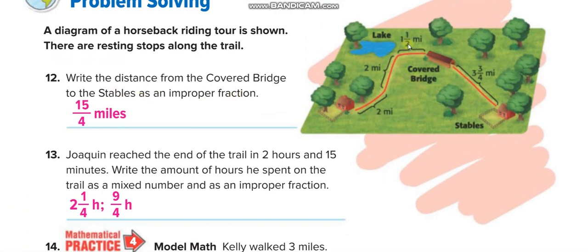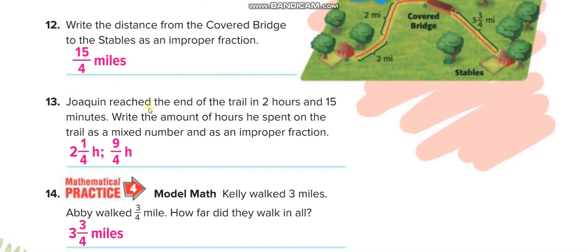Word problem: write the distance from the covered bridge to the stables as an improper fraction. The mixed number is 3 and 3/4. Converting: 3×4=12, 12+3=15, giving 15/4. Next problem: a rider finishes the trail in 2 hours and 15 minutes. Since 15 minutes is a quarter hour (1/4), the mixed number is 2 and 1/4. Converting: 2×4=8, 8+1=9, giving 9/4.